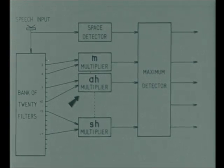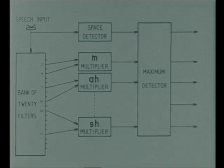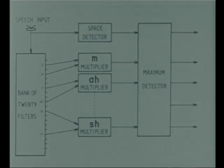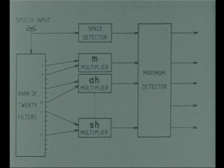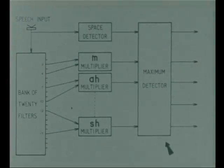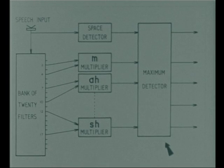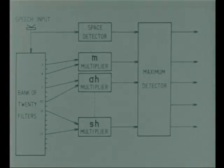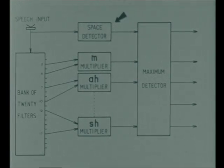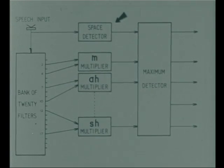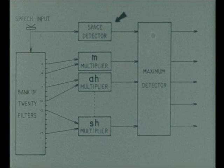The acoustic recognition is carried out by multiplying together the outputs of the two filters. The maximum detector selects the greatest of the products produced in this way. The space detector is a straightforward timing device which registers when the speech input ceases for more than a specified time.